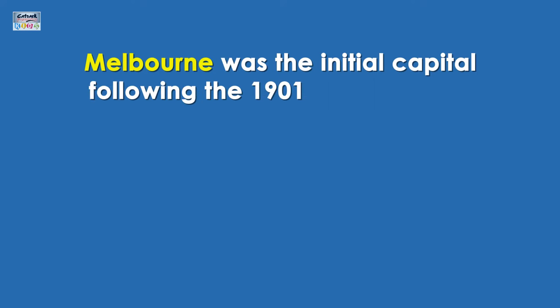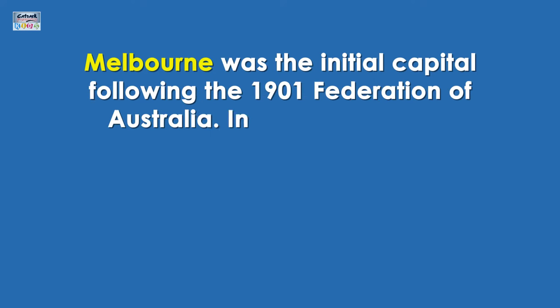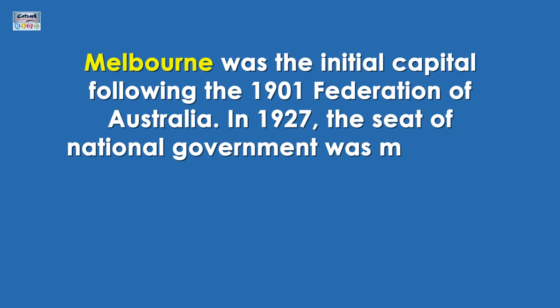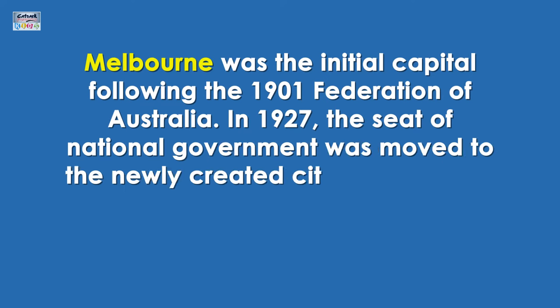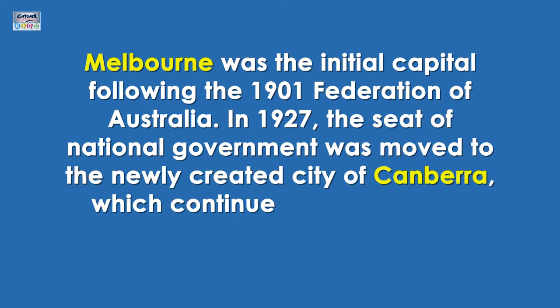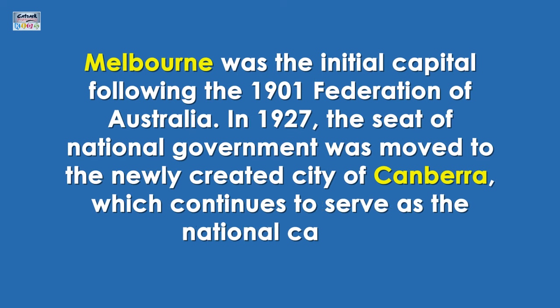Melbourne was the initial capital following the 1901 Federation of Australia. In 1927, the seat of national government was moved to the newly created city of Canberra, which continues to serve as the national capital.